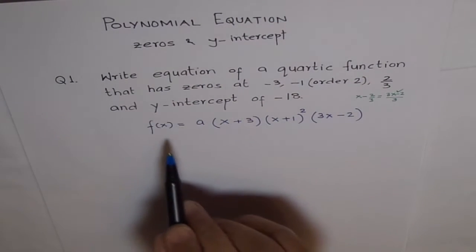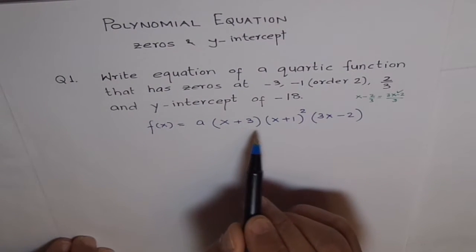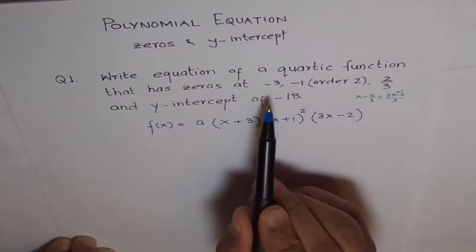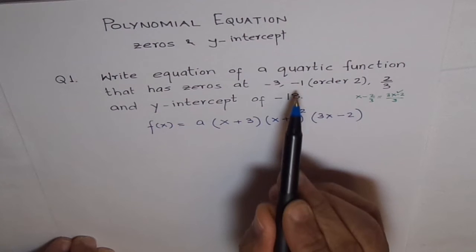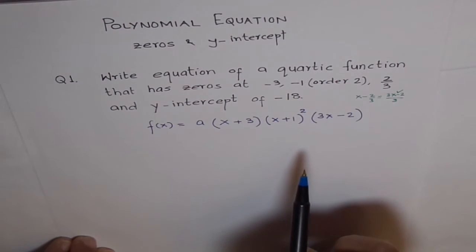So, we have a function which is a times x plus 3 times x plus 1 whole square, 3x minus 2. The zeros are satisfied: minus 3, minus 1 of order 2, and this one 2 over 3.